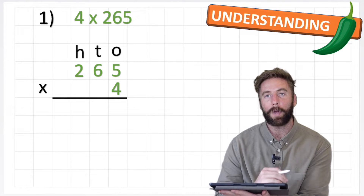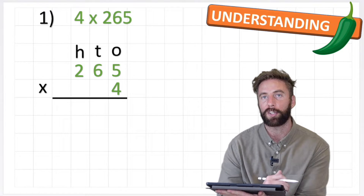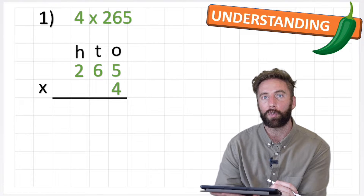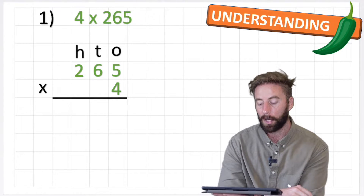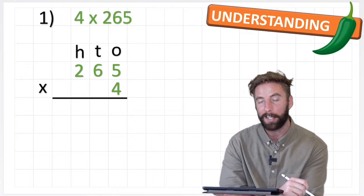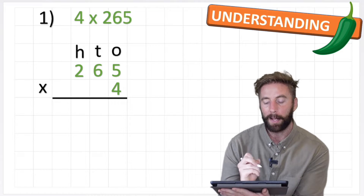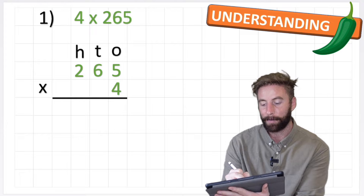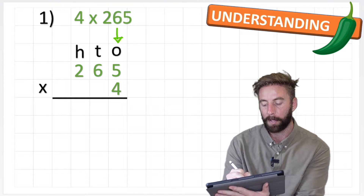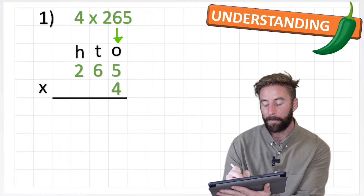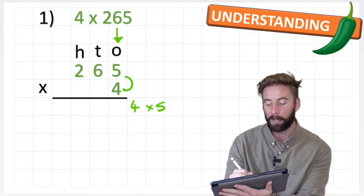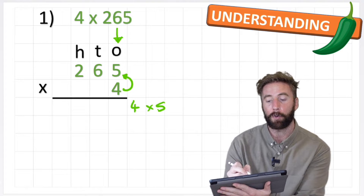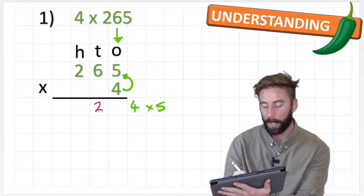We are still working with partitioned numbers, just like the grid method where we work out individual elements and multiply them. We're still partitioning these numbers. My next step says to start with our smallest value — the ones — so my first question is 4 times 5, multiplying the 4 by the 5. And 4 times 5 is 20.